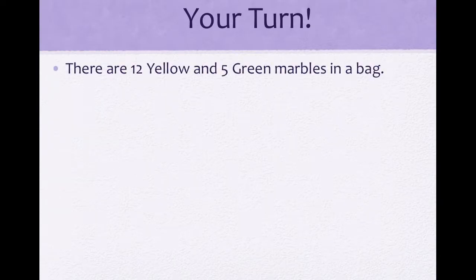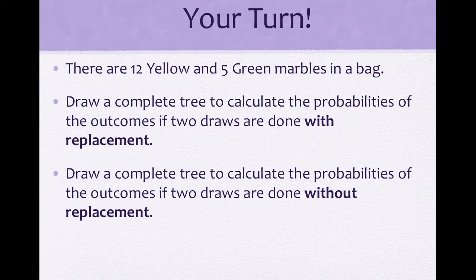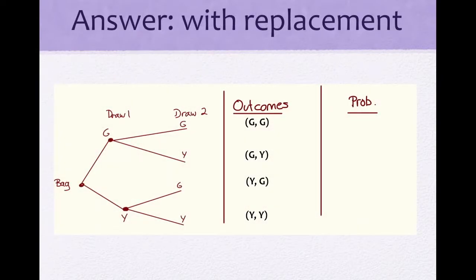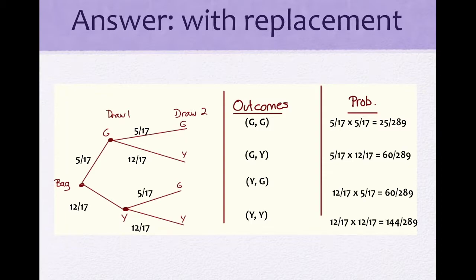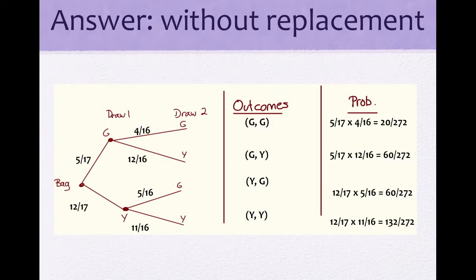Now it's your turn. There are 12 yellow and 5 green marbles in a bag. Draw a complete tree — with outcomes and probabilities columns — for two draws done with replacement, and then do the same without replacement. For with replacement, nothing changes: 5 greens and 12 yellows each draw. For without replacement, the second draw is out of 16; remember one less green if you took a green, or one less yellow if you took a yellow, then multiply them together.